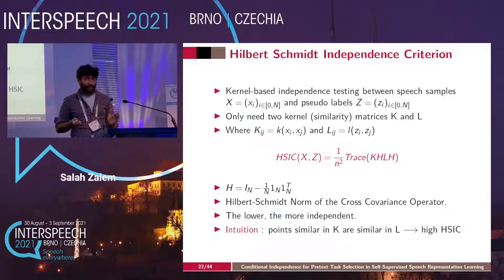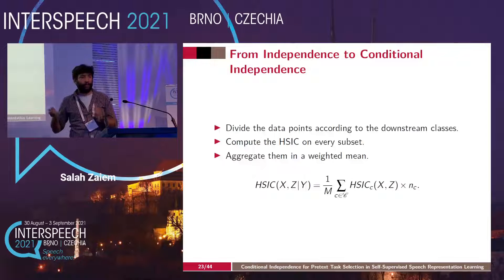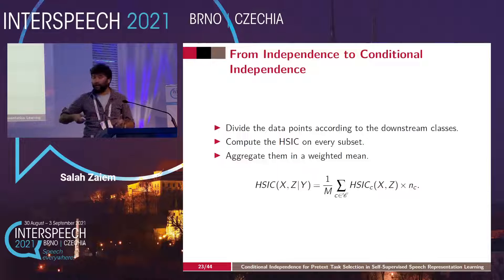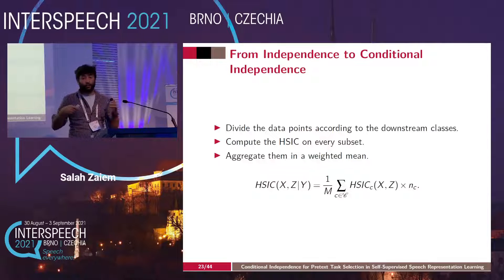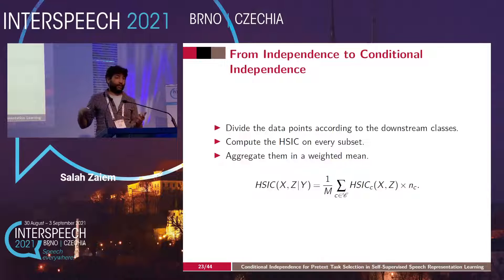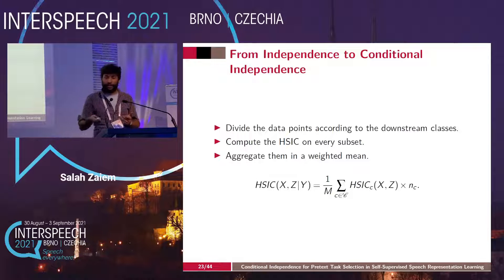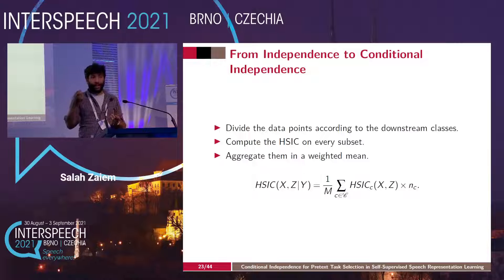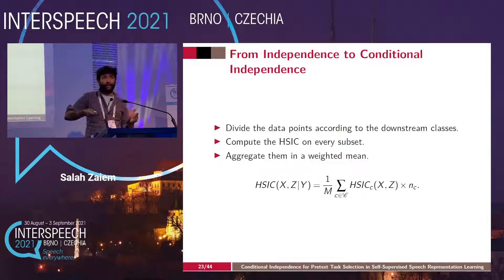Now we have an independence test, but we want conditional independence, so we need to get Y into the loop. We are lucky to have discrete downstream labels Y — either speaker IDs for speaker recognition, or for ASR we cut at the word level and use the spoken word as the downstream class. We divide our data points according to the downstream class, compute HSIC on every subset, then aggregate them in a weighted mean weighted by the number of points NC in every class. This gives us a conditional independence estimate between X and Z given Y, and if this is low, Z is a good pretext label for the downstream task.